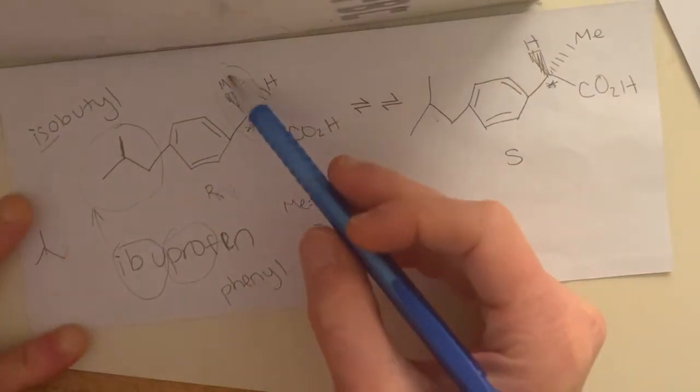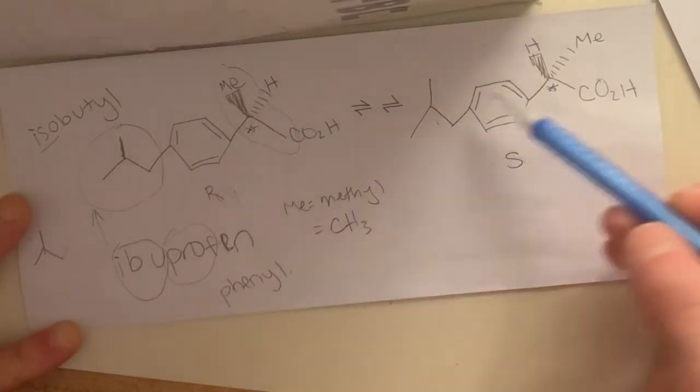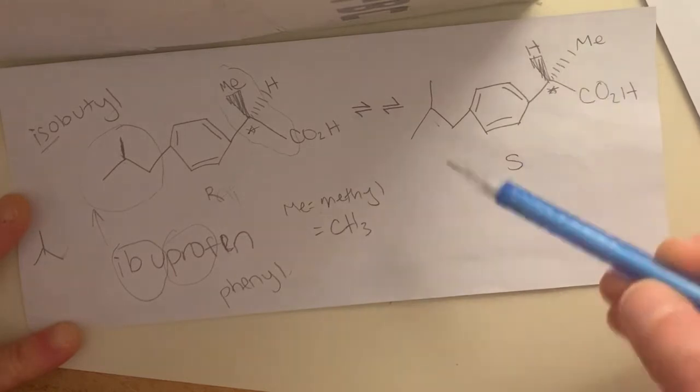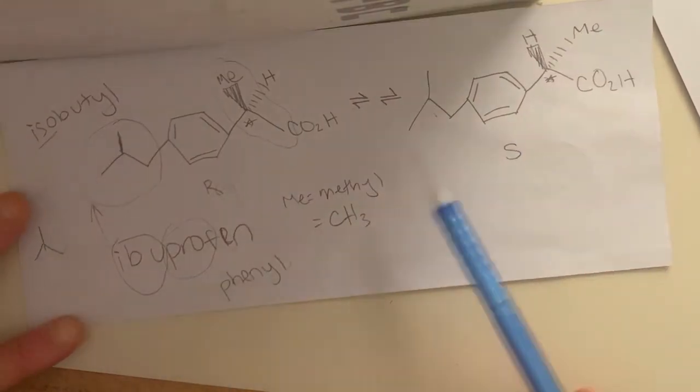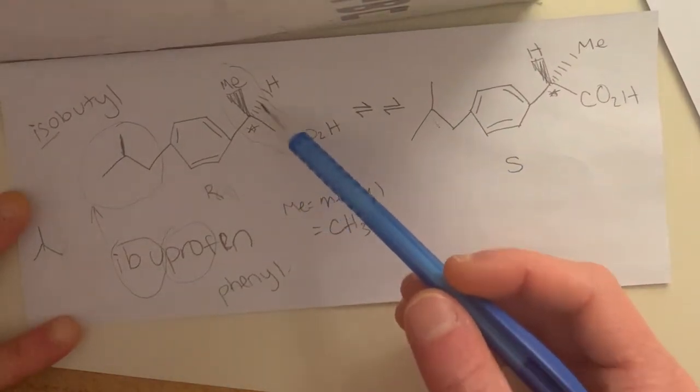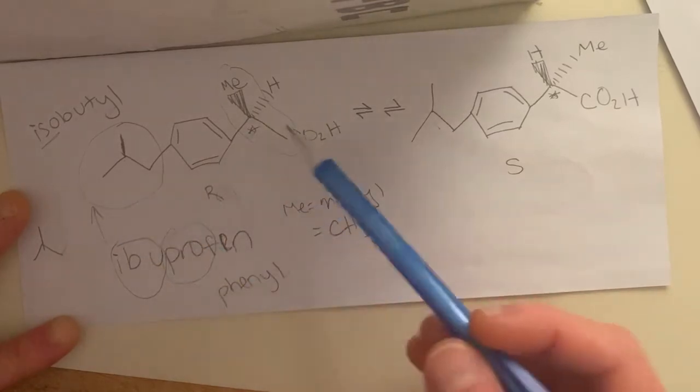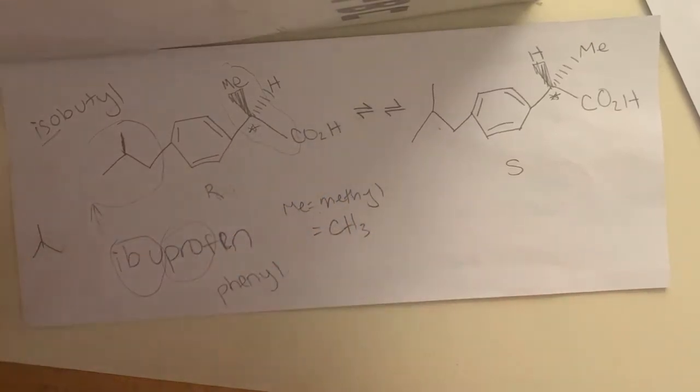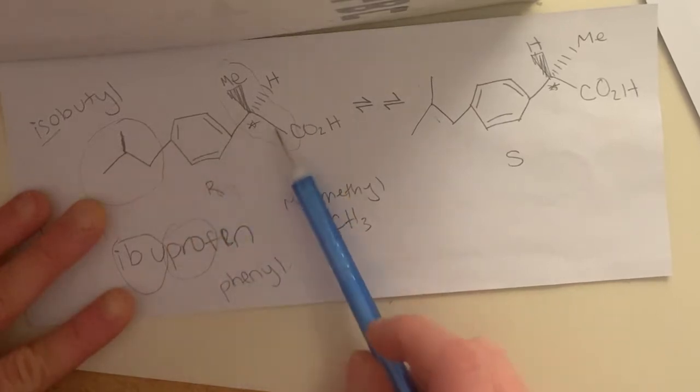So you can see here we have the methyl coming forward and the hydrogen away. And here we have the hydrogen coming forward and the methyl away. And if something is just like a solid line, this is all in the plane of the paper or the, well, whatever, the plane of the molecule. So this is all in the same plane.